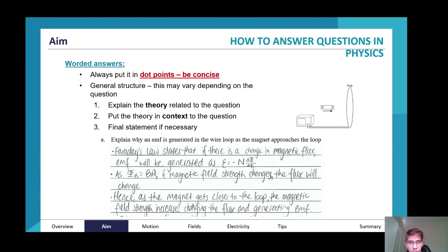The second point is that you need to put the theory into context. For example, as flux is equal to B multiplied by A, where B is the magnetic field strength and A is the area of the loop, if the magnetic field strength changes, the flux will also change.